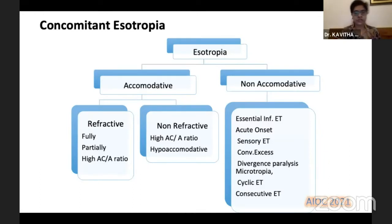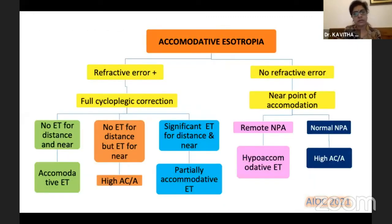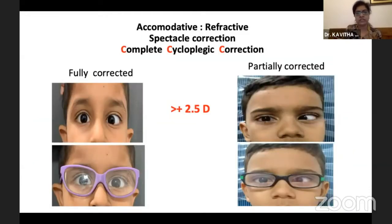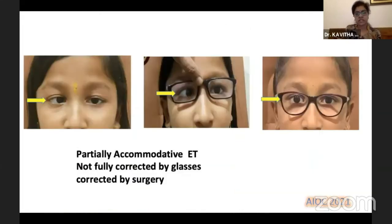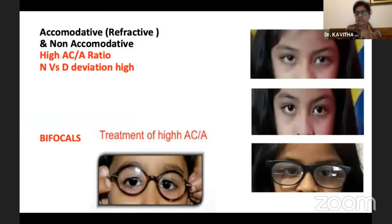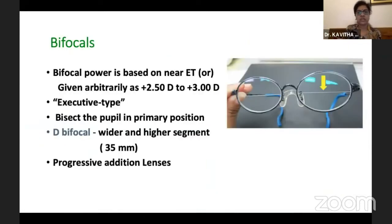Coming to comitant esotropia, there are two broad types: accommodative and non-accommodative. For accommodative esotropia — the refractive error type — perform a full cycloplegic refraction; anything more than 2.5 diopters can be corrected with glasses. It may be fully corrected or partially corrected with residual squint, in which case surgery is considered. The other entity is esotropia greater for near; if more than 15 prism diopters, think of bifocals starting at 2.5 diopters — executive bifocals or progressive addition lenses.